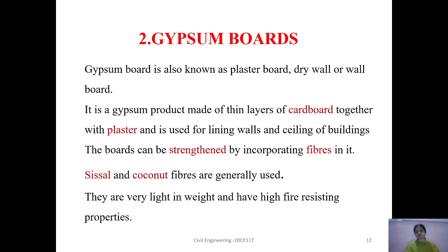The second product is gypsum boards. Gypsum board is also known as plaster board, dry wall, or wall board. It is a product made of thin layers of cardboard together with plaster, and it is used for lining walls and ceilings of buildings.